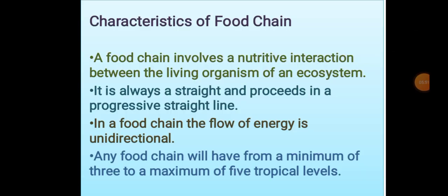Now let's think about the characteristics of a food chain. A food chain involves a nutritive interaction between the living organisms of an ecosystem. It is always straight and proceeds in a progressive straight line. In a food chain, the flow of energy is unidirectional. Any food chain will have a minimum of three to a maximum of five trophic levels. These are the important characteristics of a food chain.